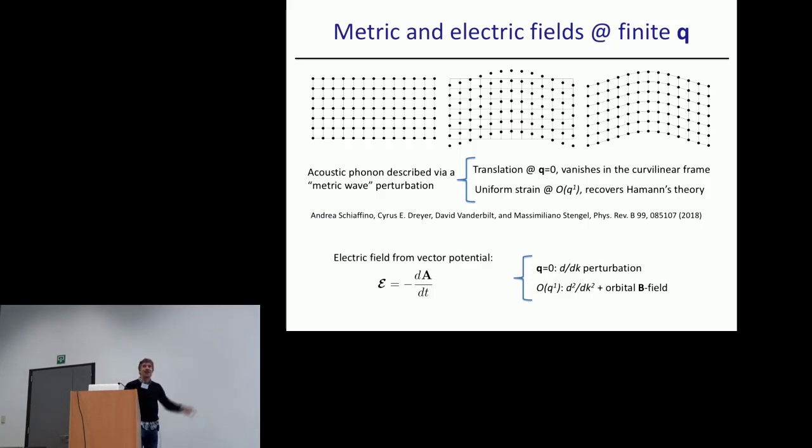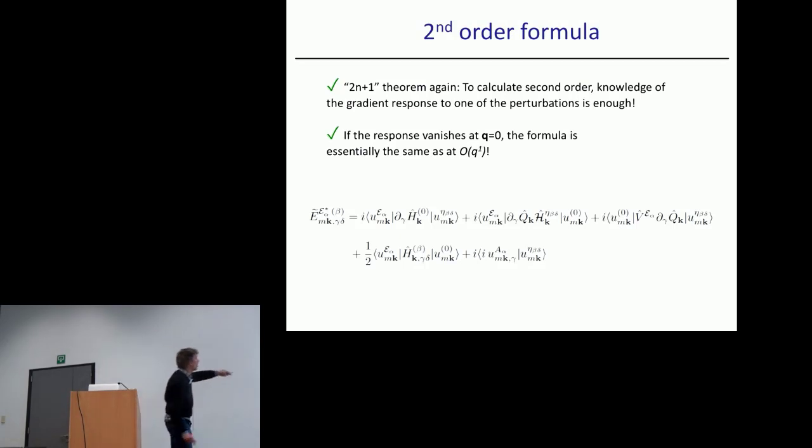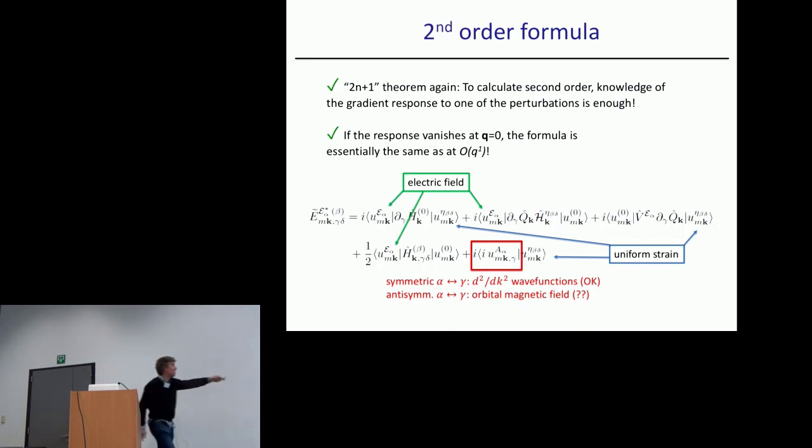Regarding the electric field, we use this relationship of classical electrodynamics. In practice, the problem is only to calculate the response to a modulated vector potential field. We need the low Q expansion which involves d/dk, d²/dk², and also the orbital magnetic field response. In the end we get the second order formula which is what I showed you before. The fact that the metric response vanishes at Q equals zero makes this possible. We get all known objects that are already available in Abinit plus d²/dk², which I don't know about the orbital magnetic field, but at some point it will have to be implemented.